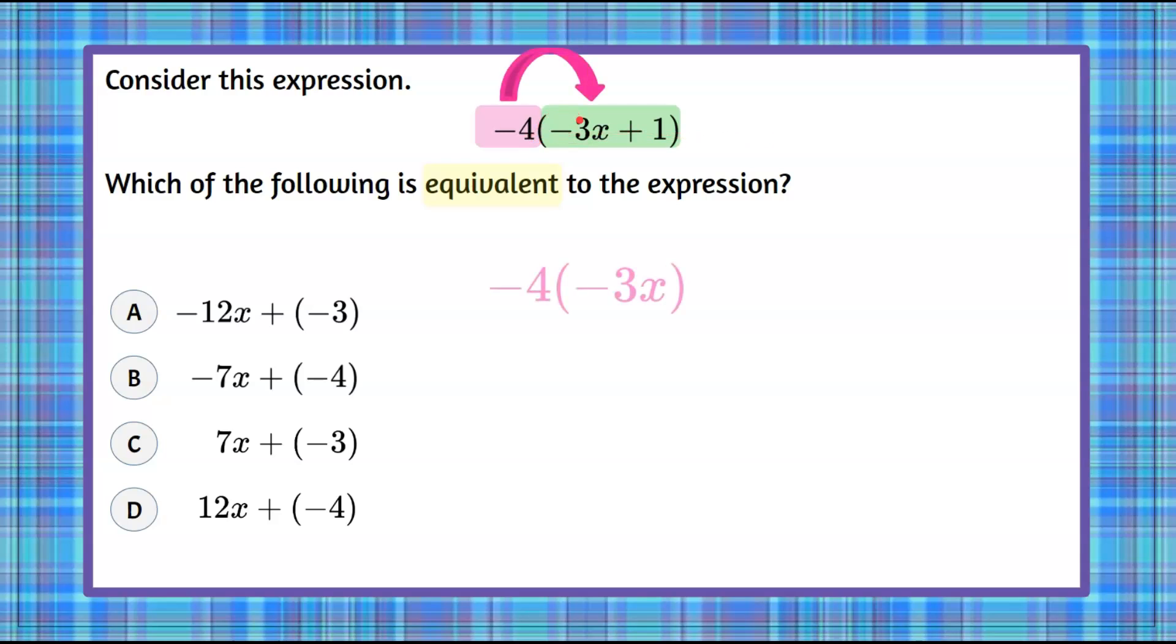So negative 4 times negative 3x and then we're going to add negative 4 multiplied by 1. So again you're sharing the negative 4 to both terms and you're multiplying.